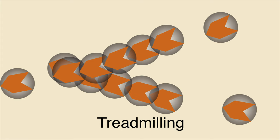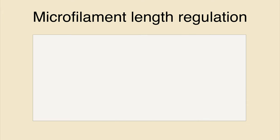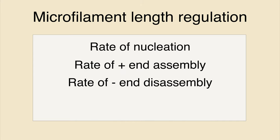However, there are specific times when the cell needs to initiate actin lengthening or shortening to aid various processes. So how can the cell regulate microfilament length? There are four ways the cell controls actin polymer length: it can change the rate of nucleation, the rate of assembly at the plus end, the rate of disassembly at the minus end, or it can change the stability of the actin filament overall.